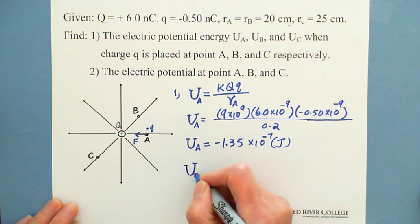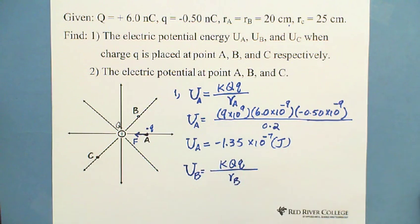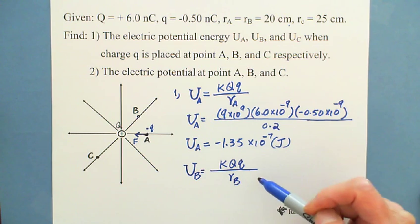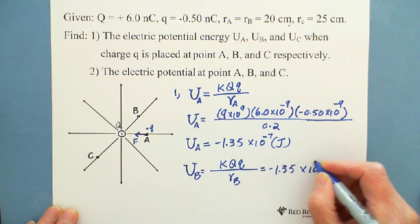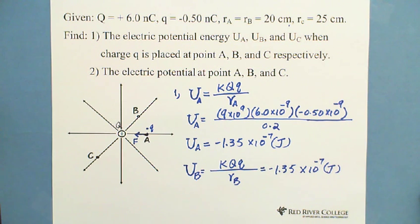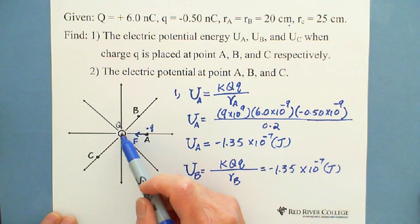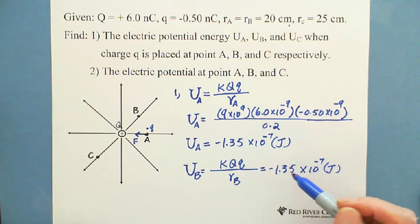Using the same formula — k, big Q, small q, divided by RB — because Ra equals Rb, all the numbers k, big Q, small q, and R will be the same. So they will get the same answer as Ua, which is negative 1.35×10⁻⁷ joules. Because energy is a scalar — electric potential energy is also a scalar. They don't have direction, only magnitude. So as long as the distance from A to Q and from B to Q are the same, they will have the same electric potential energy.